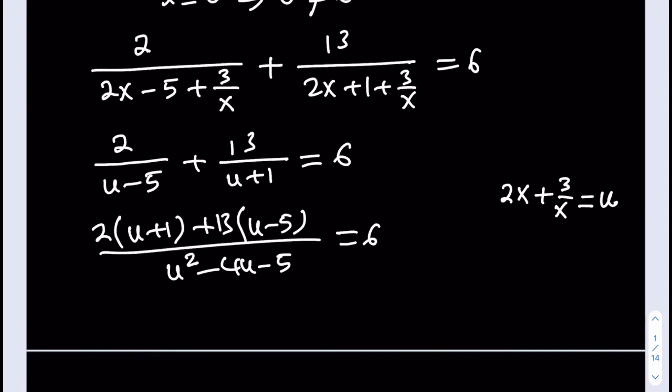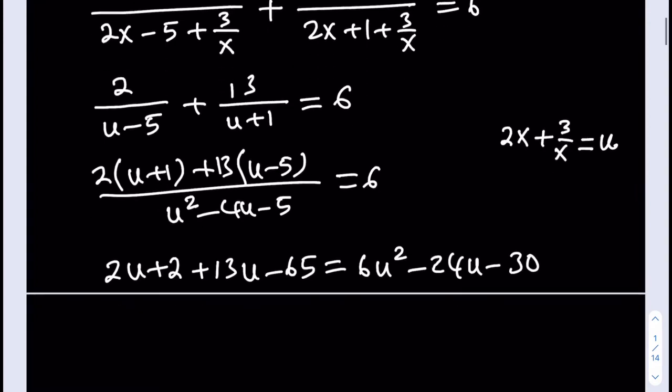Obviously, what I need to do now is simplify the numerator. 2u plus 2. It's like 2u, you know, the birthday song. Plus 13u minus 65. And that is equal... Now, I'm going to go ahead and distribute the 6: 6u squared minus 24u minus 30.